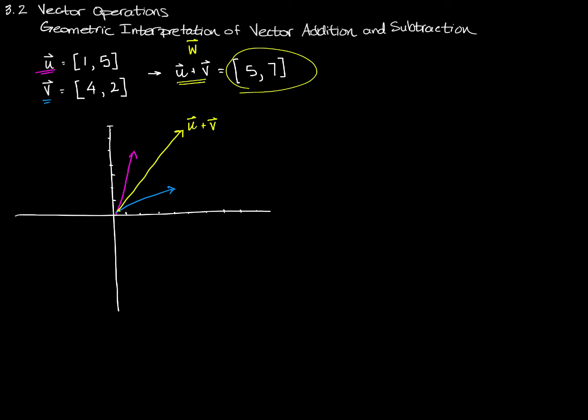And what I'd like you to observe about vector u plus v is that it's actually the diagonal of a parallelogram. If I superimpose another copy of vector u here and another copy of vector v here, then I end up with a parallelogram. The two sides opposite each other are parallel, and they're the same length. And this new vector that I got by adding them together is the diagonal of that parallelogram.